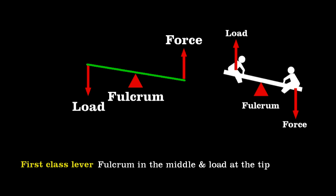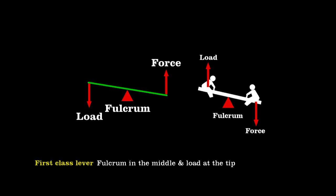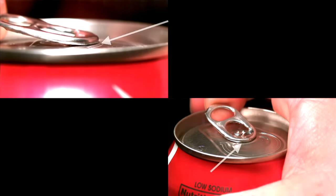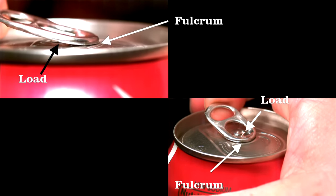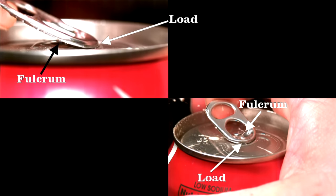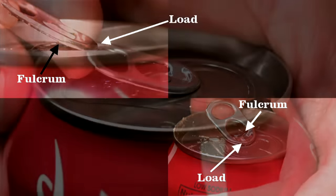Now, let's look at how this applies to a tab on a pop can. The tab starts as a second-class lever where the tip of the tab is the fulcrum and the rivet the load, but then changes the moment the can vents to a first-class lever where the load now is at the tip and the fulcrum the rivet.